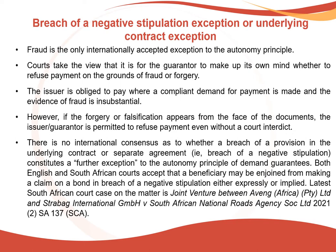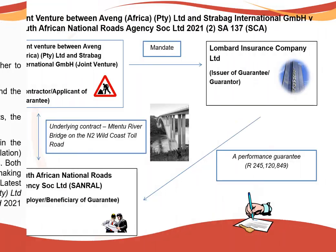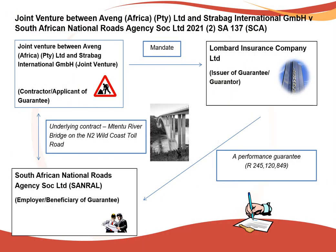There is no international consensus as to whether a breach of a provision in the underlying contract or a separate agreement — referred to as a breach of a negative stipulation — constitutes a further exception to the autonomy principle of demand guarantees. Both English and South African courts accept that the beneficiary may be interdicted from making a claim on a bond in breach of a negative stipulation, either expressly or impliedly. The latest South African court case on the matter is Joint Venture Aving and Straubach versus South African National Roads Agency. In the next slide, we will focus on the case in more detail.